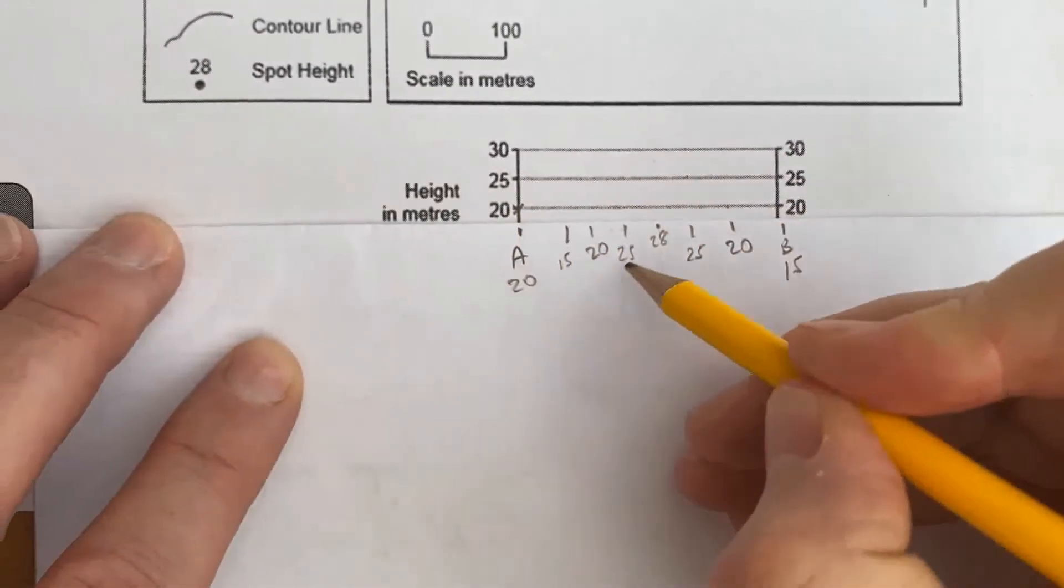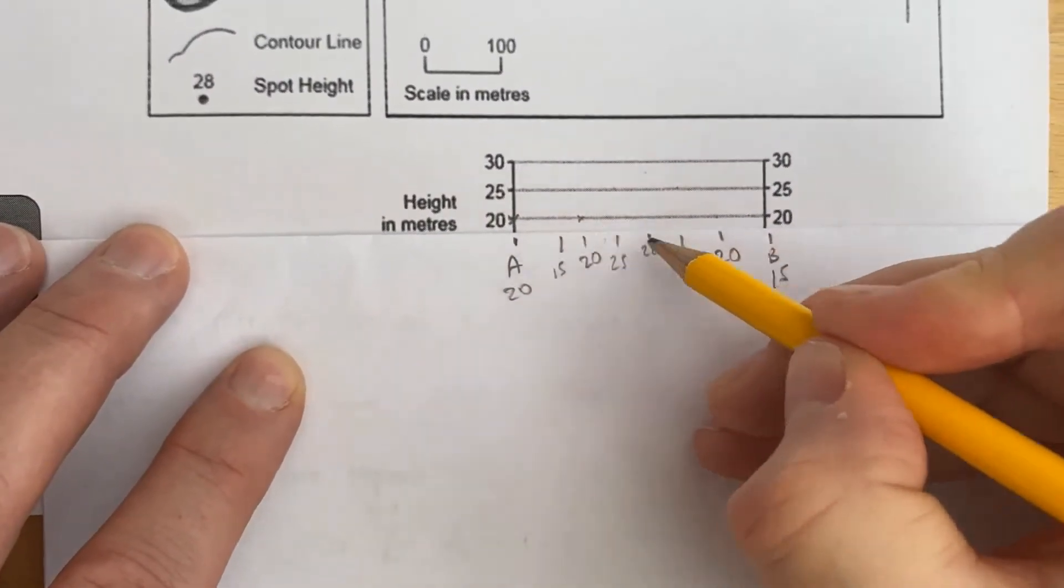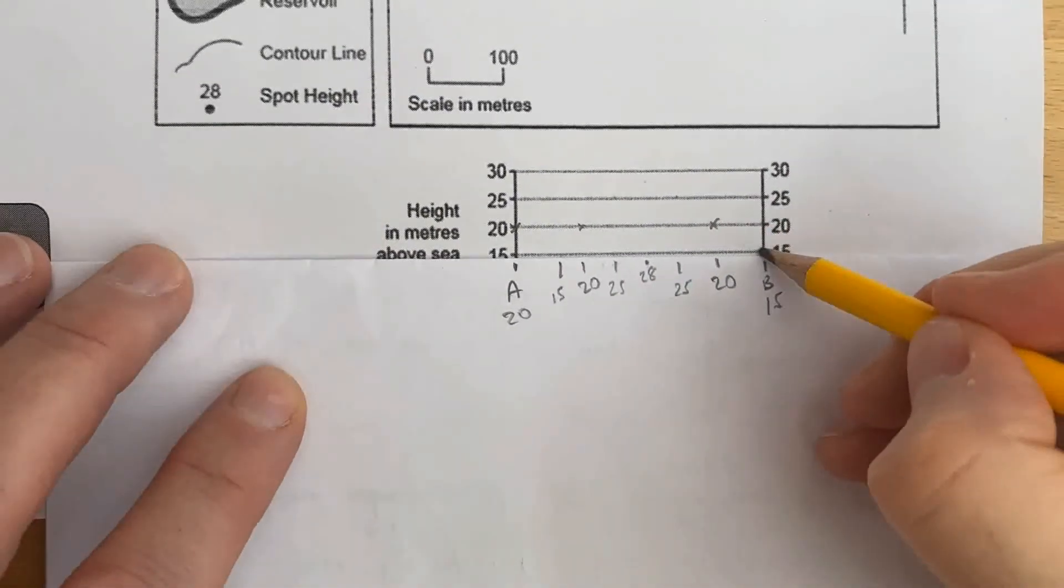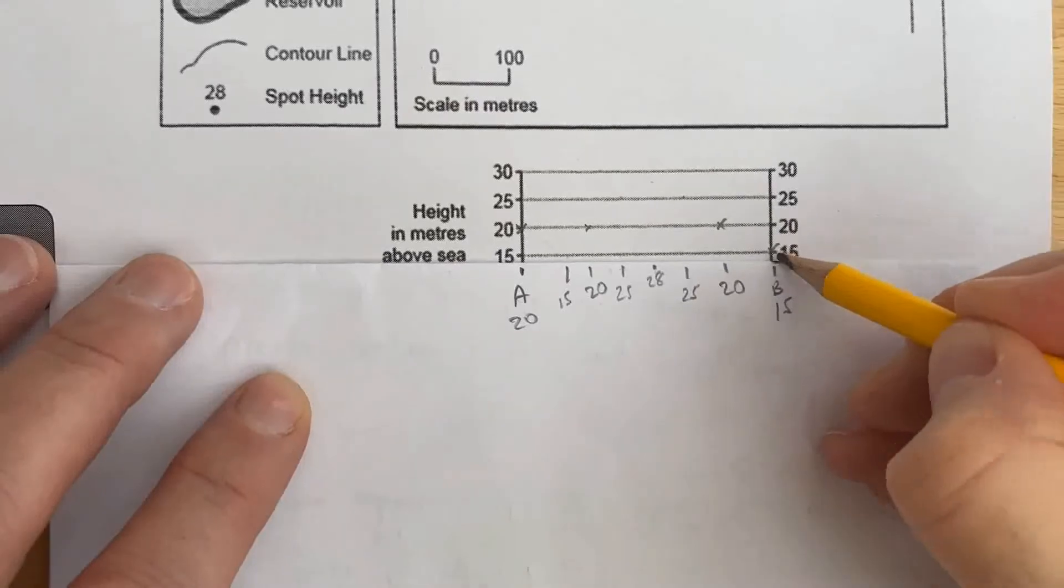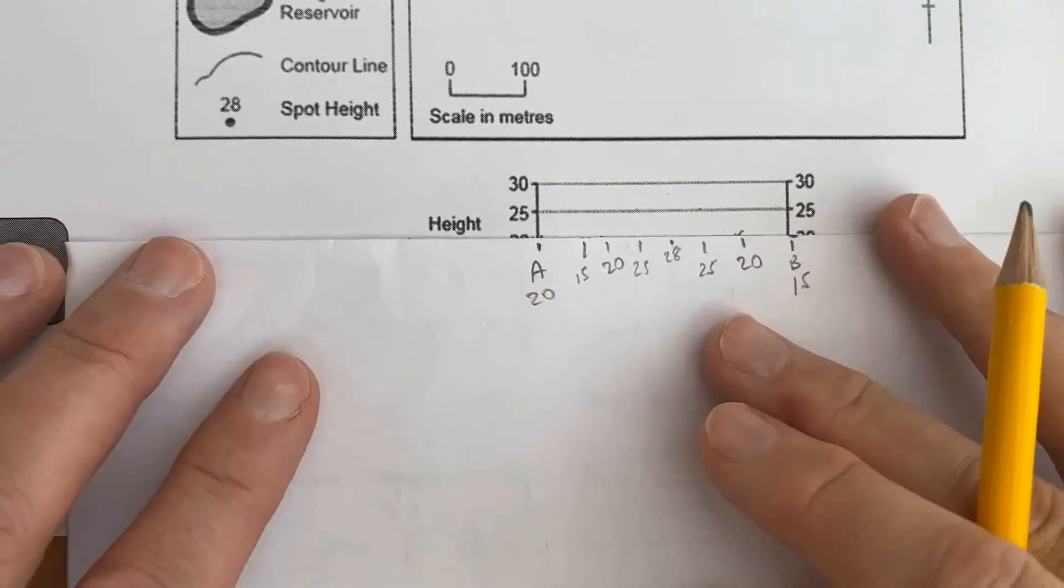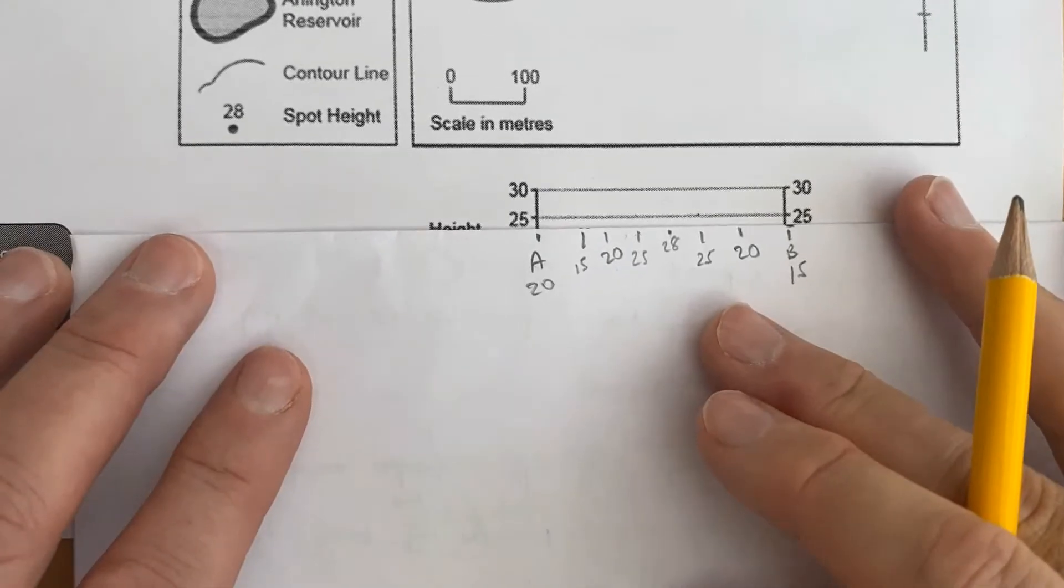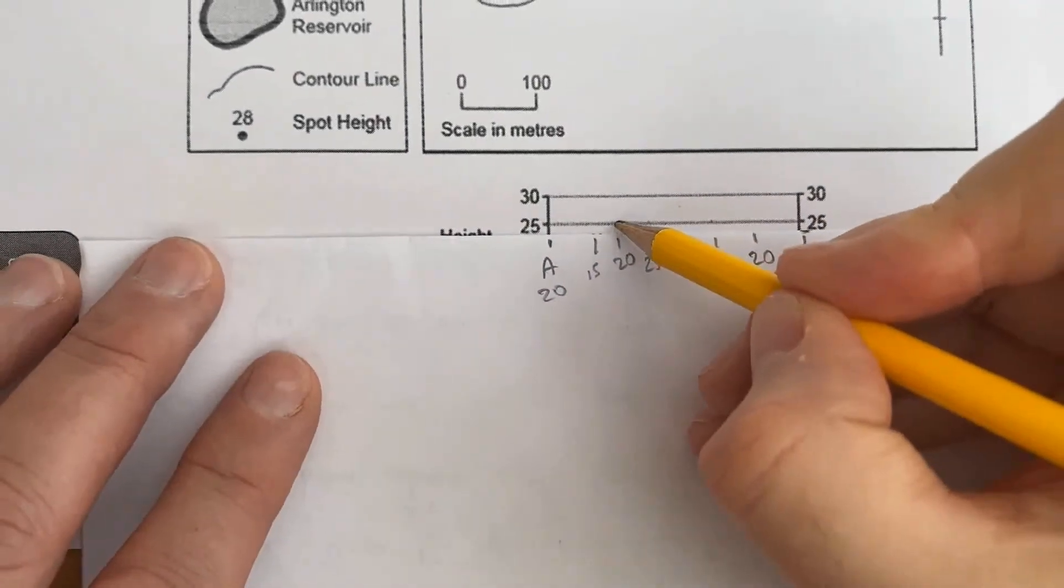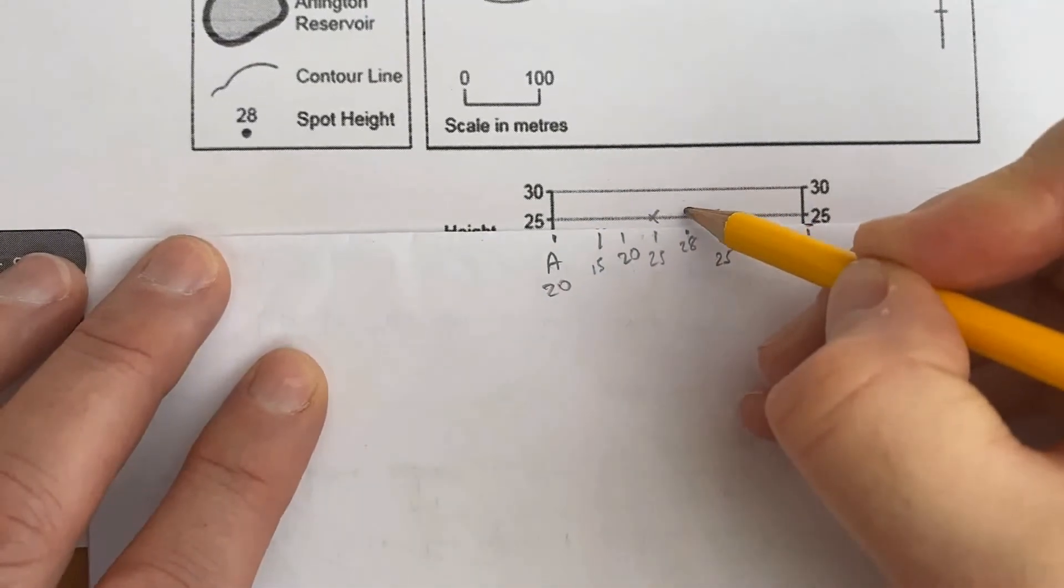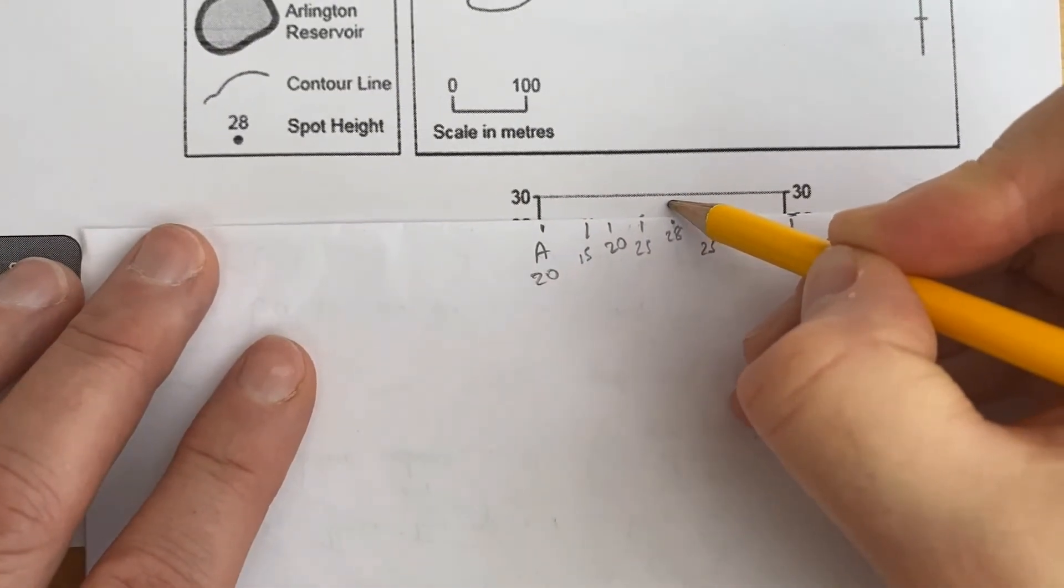I put across where they are. Every time they cross the line: 20, 15, 15, there's a 15, there's a 15, there's 25, and the final one up here, 28.